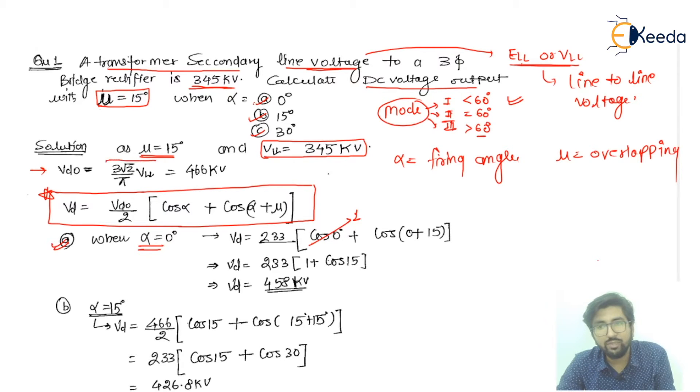That is actually 3√2 upon π times VLL or you can write ELL. No need to be worried for that. You can write VLL or you can write ELL, and after solving for that, you will have 466 kilovolts.